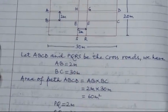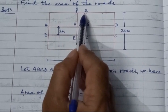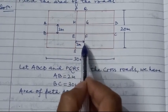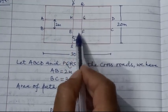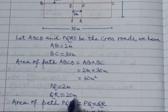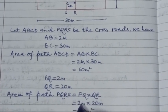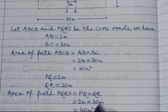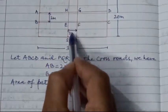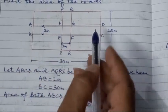Now for road PQRS: PQ is equal to 2 meters — that is the width of the road — and QR is equal to 20 meters. The area of path PQRS equals PQ into QR, which is 2 meters into 20 meters. Multiplying, we get 40 meter square. So this road has an area of 40 meter square and the other path has an area of 60 meter square.